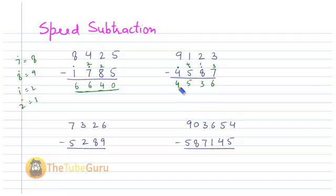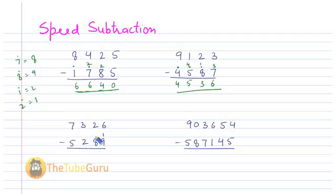Let's see this next example: six minus nine. Six cannot be subtracted from nine, so I take the complement of nine, which is one, and put a dot on the next digit. Six plus one is seven.